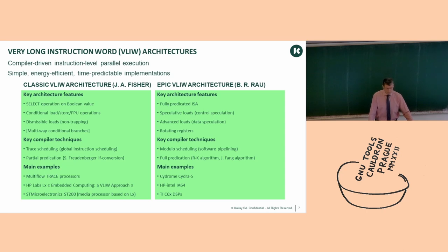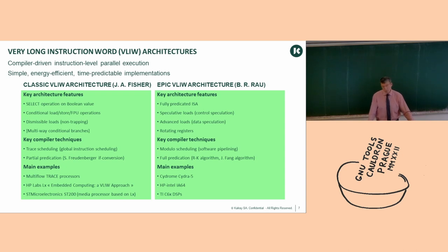It's important to know there are two families of VLIW that are often confused. There is the classic VLIW architecture by Josh Fisher in 1979 and 1981, and later the EPIC VLIW architecture from Bob Rau, which eventually became the Play-Doh architecture and the IA-64. The classic VLIW started in the Trace Machine, then Josh Fisher went to HP Labs and refined it for embedded and media processing. This kind was used at STMicroelectronics.